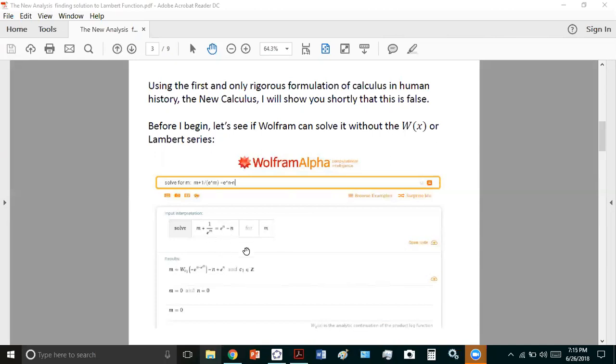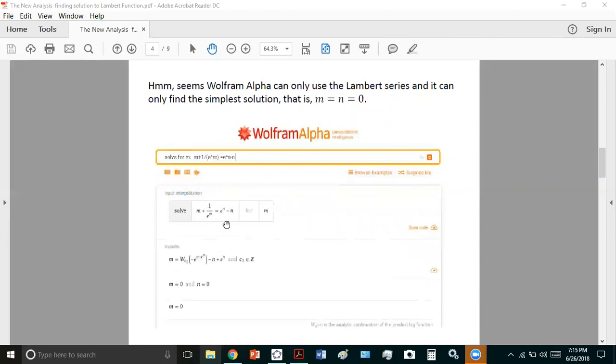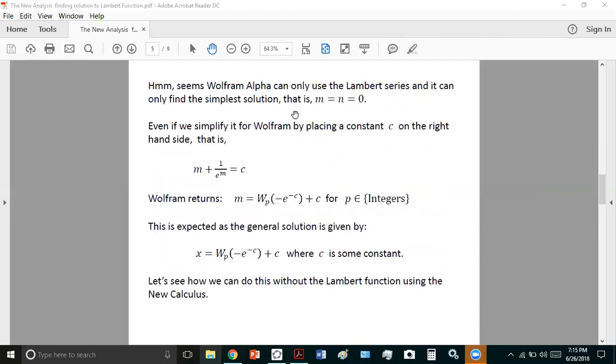but even if you try and make it simpler for Wolfram Alpha by just putting in a constant, for example, on the right-hand side, as you see here, it will still try to give it to you in terms of the Lambert function. So, and this is expected because the general solution is this, where c is some constant.